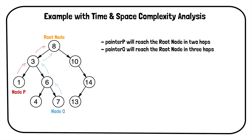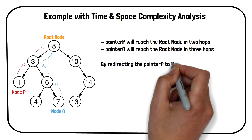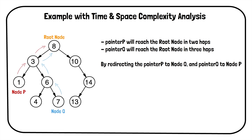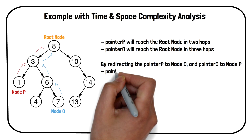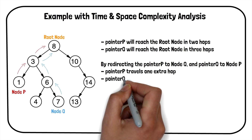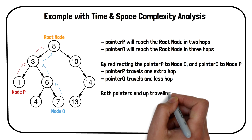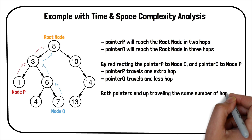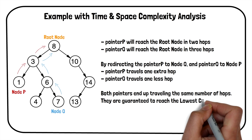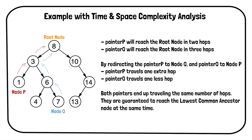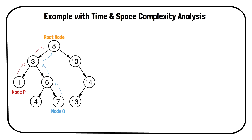Pointer p has to travel 1 hop less to reach the root node. By redirecting pointer p to node q and pointer q to node p, we make pointer p travel 1 extra hop and pointer q travel 1 less hop. Thus, both pointers end up traveling the same number of hops and are guaranteed to reach the lowest common ancestor node at the same time.